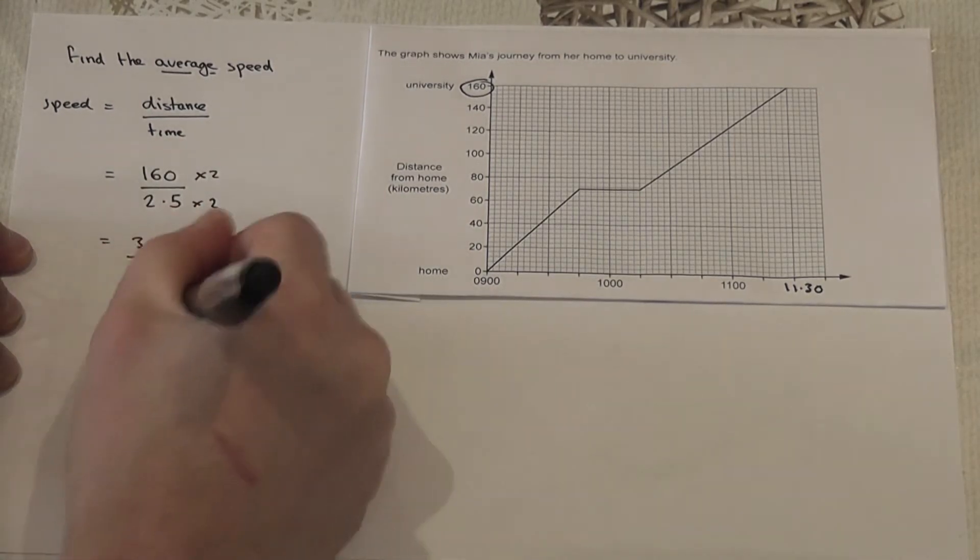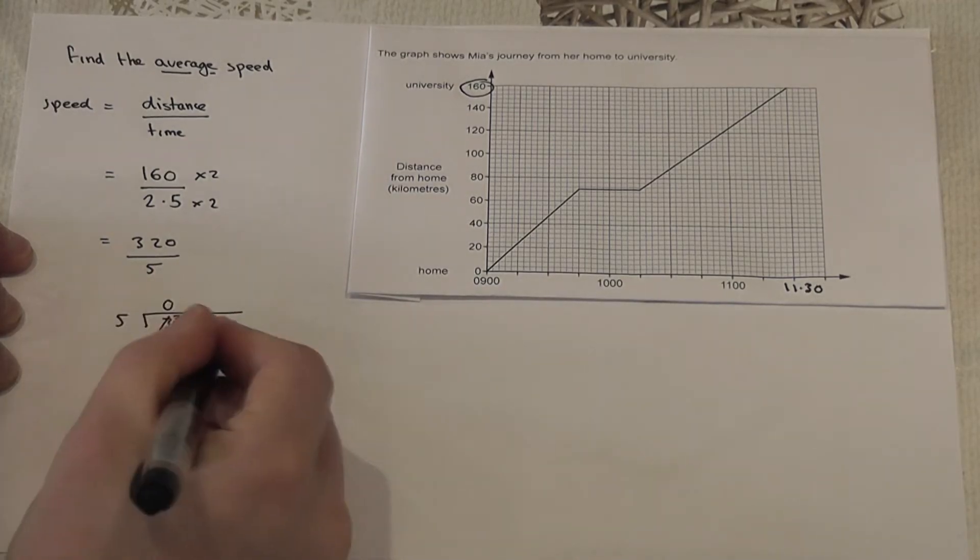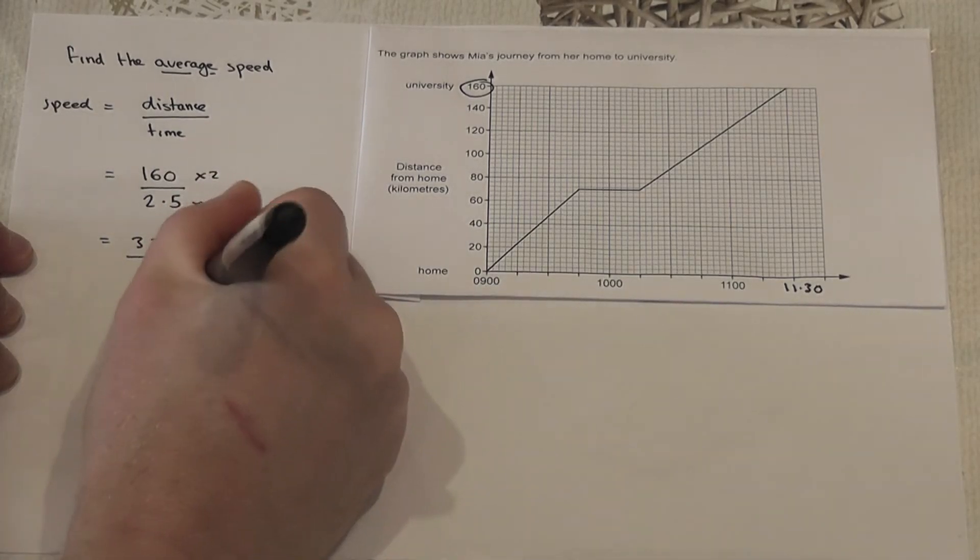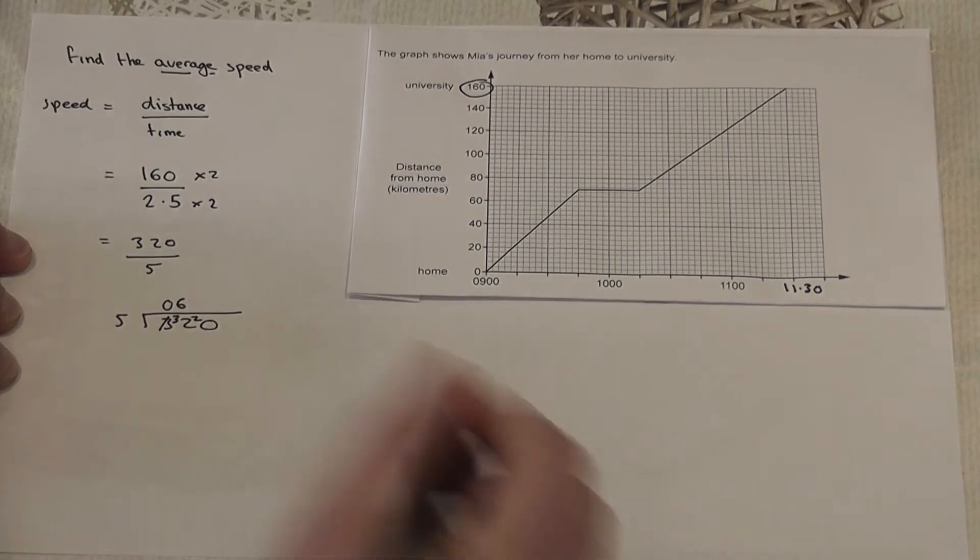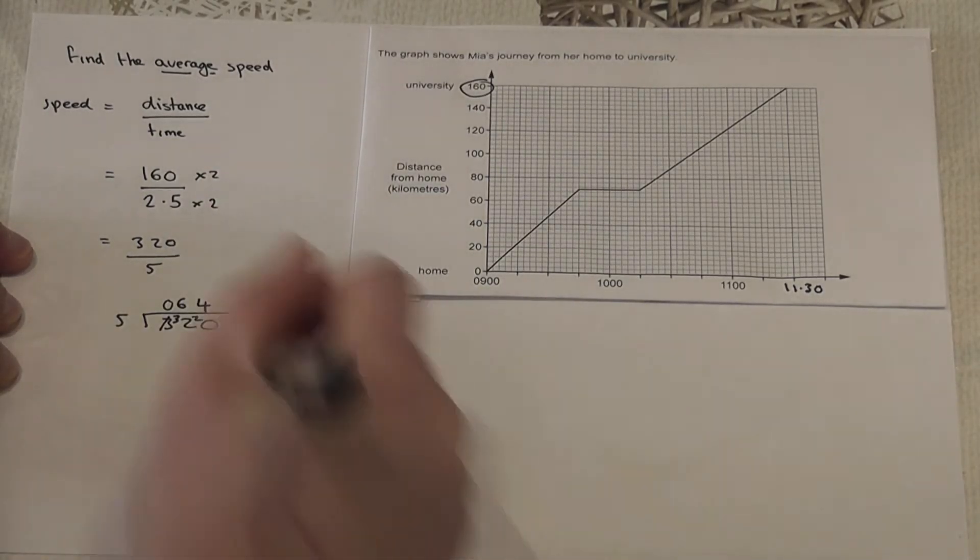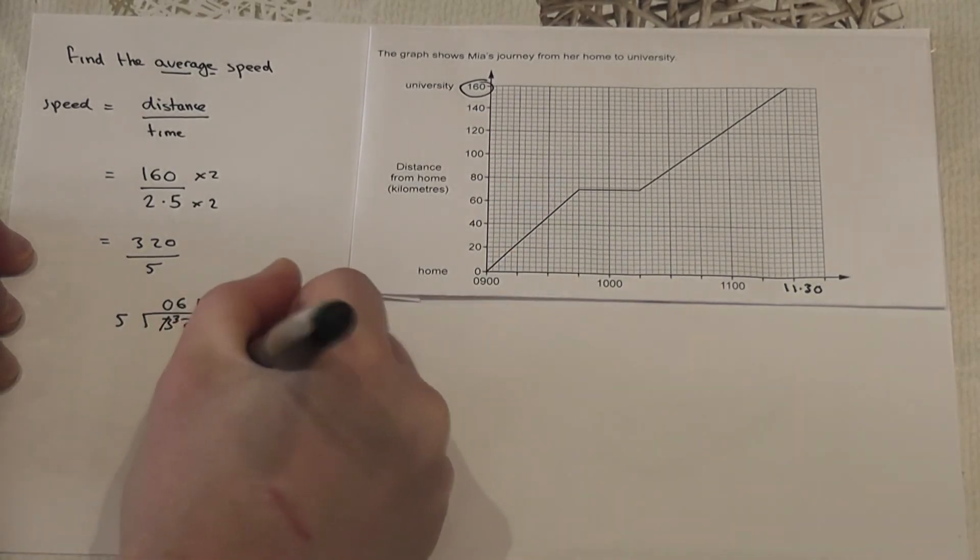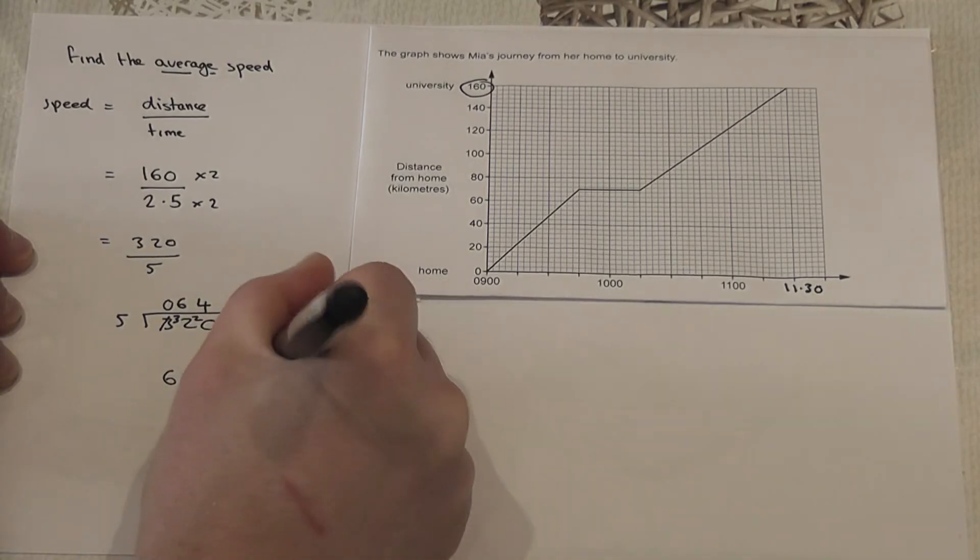How many fives are there in 320? So the answer is an average speed of 64 kilometers per hour.